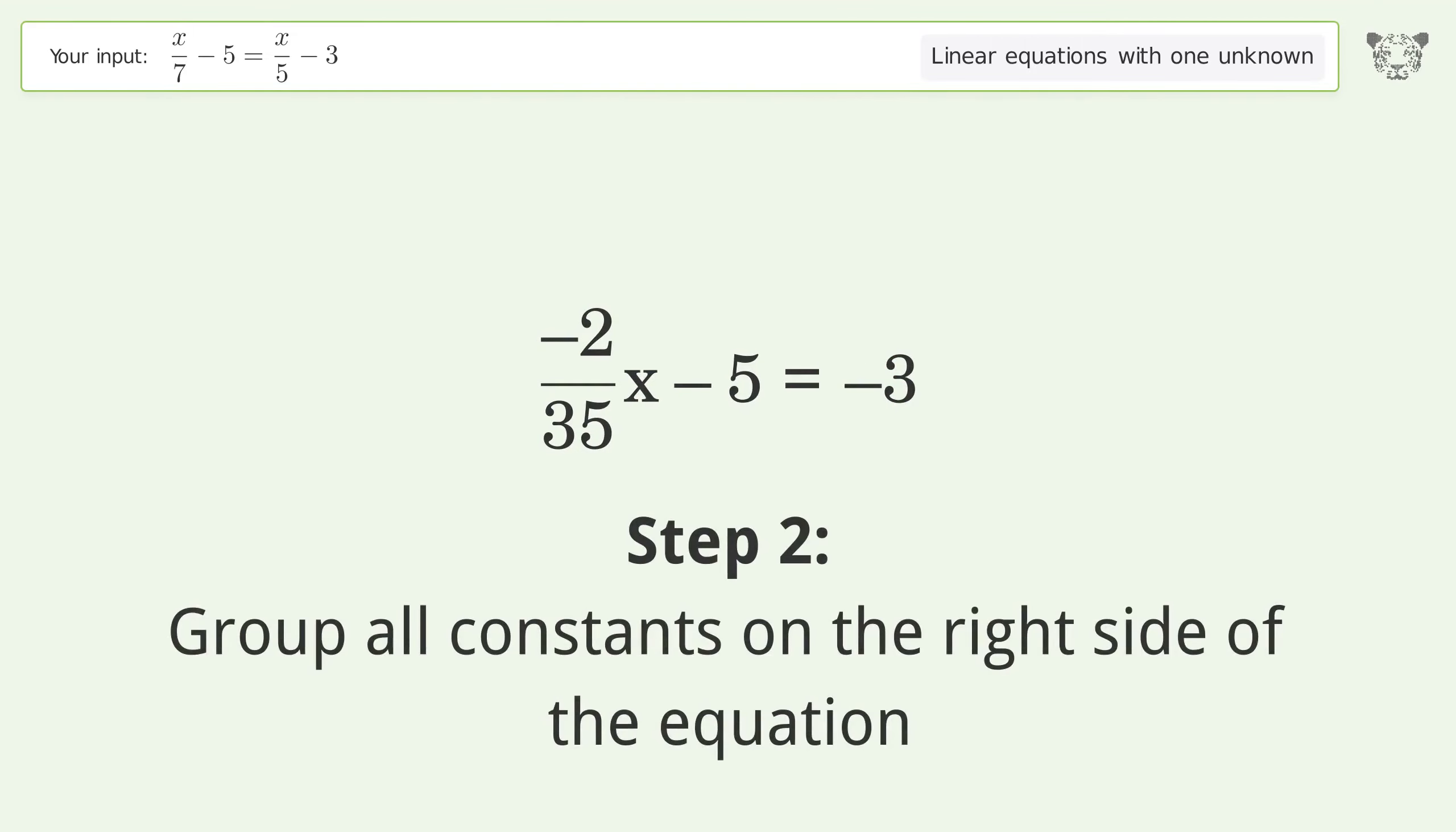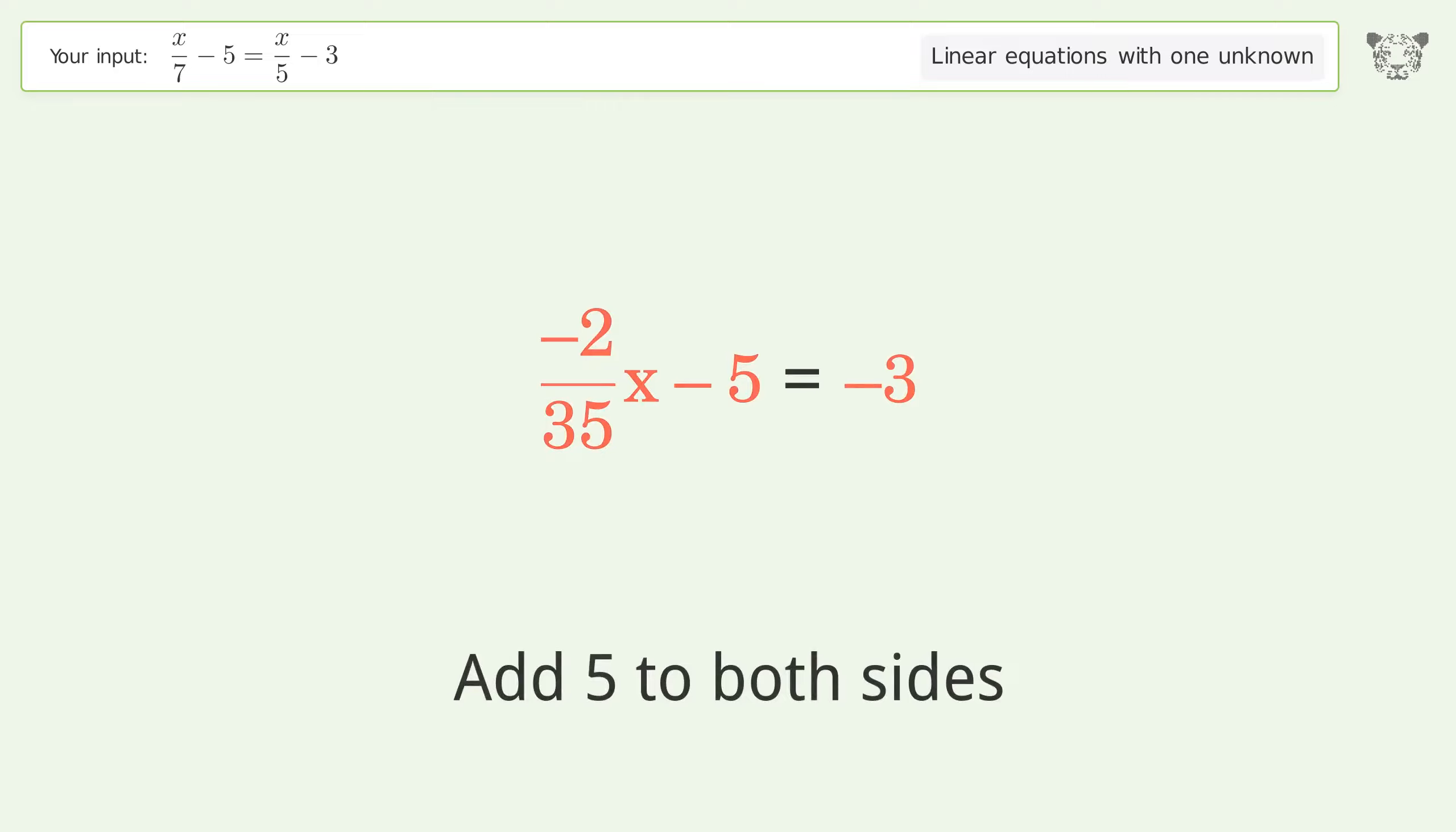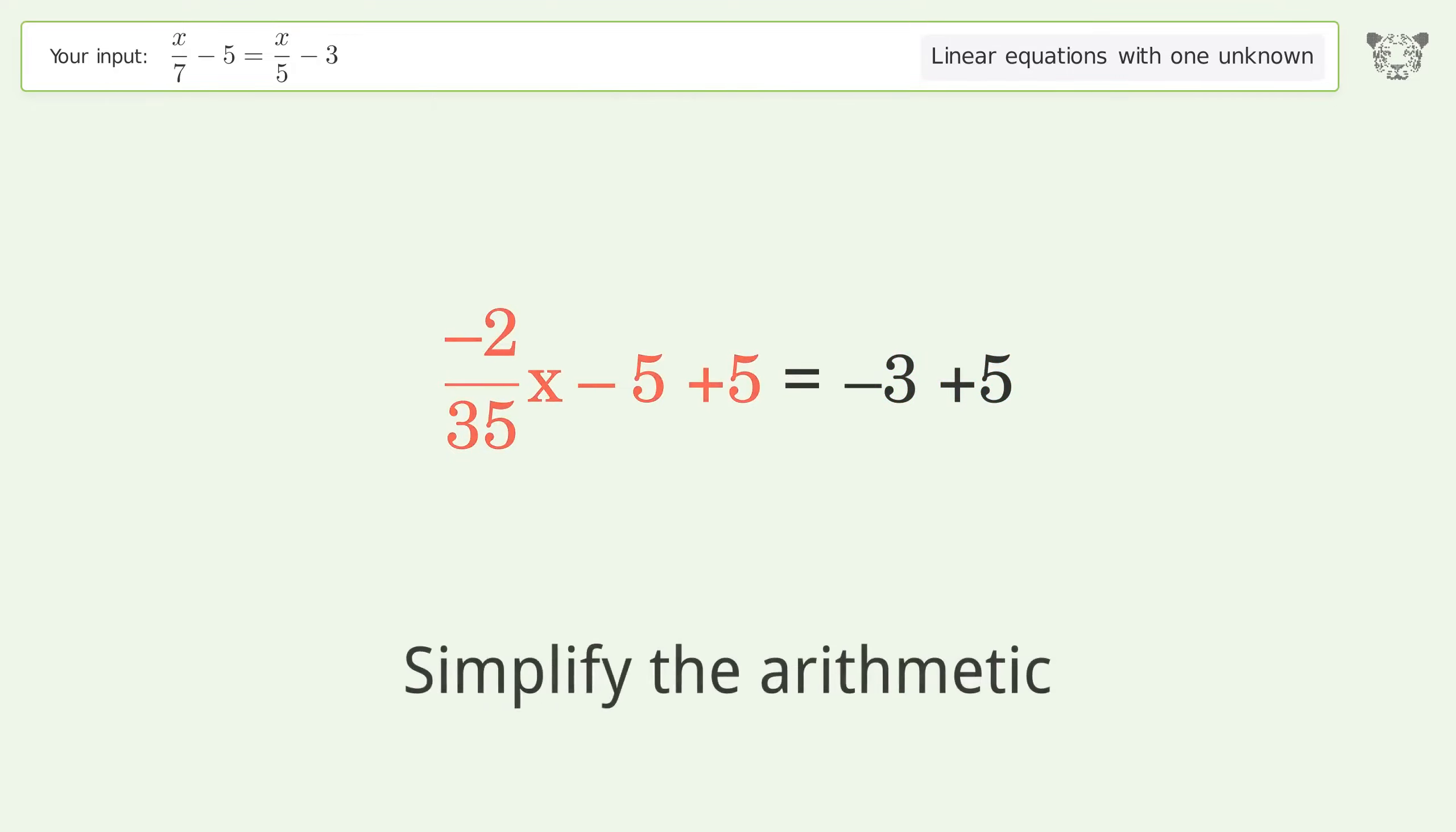Group all constants on the right side of the equation. Add 5 to both sides. Simplify the arithmetic.